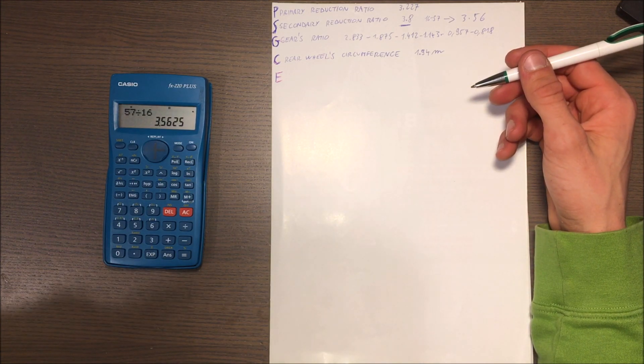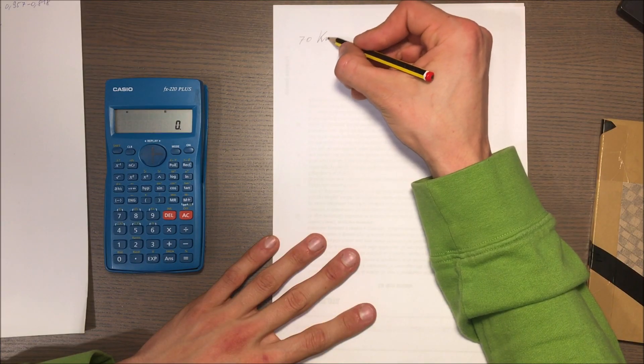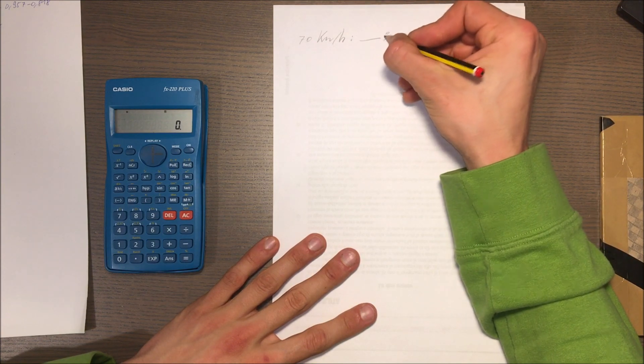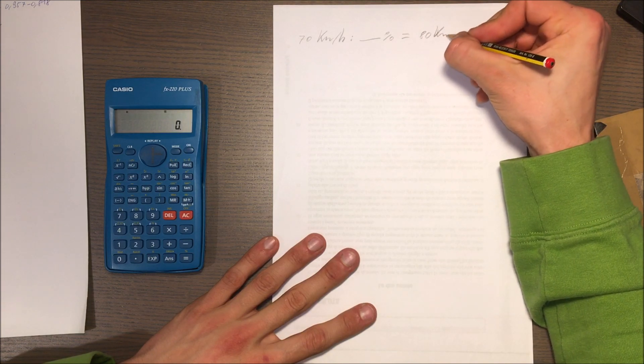So I know if I go 70 kilometers per hour, the speed I read on the speedo is 80 kilometers per hour, which is 100 percent.